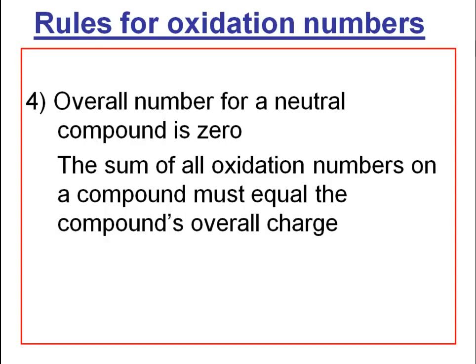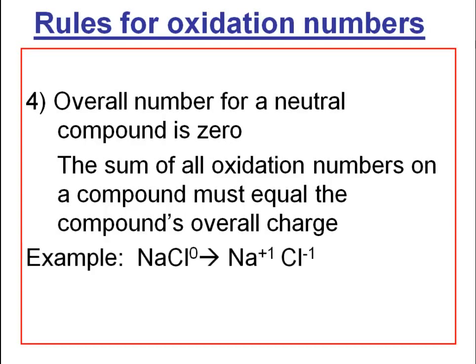For example, sodium chloride has a zero overall oxidation number because it's neutral — the sodium ion has an oxidation number of +1 and the chlorine ion has −1. If you look at the sulfate ion, SO₄²⁻, and need to determine the oxidation number of sulfur and oxygen, sulfur has a +6.